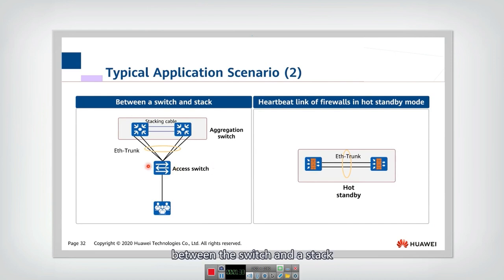Another application scenario will be between the switch and a stack. Here, the stack means we can aggregate multiple switches together, and the aggregated switch we call a stack. That actually is iStack technology. So between this iStack, the intelligent stack and the access switch, there are multiple links. And we can use the Ether trunk to aggregate the multiple links together. So this will provide a much higher reliability between the access switch and the stack.